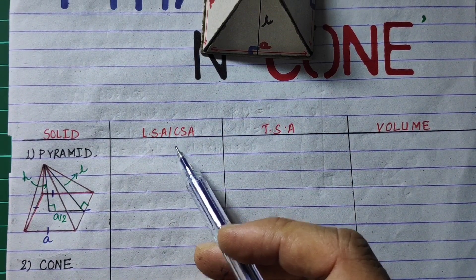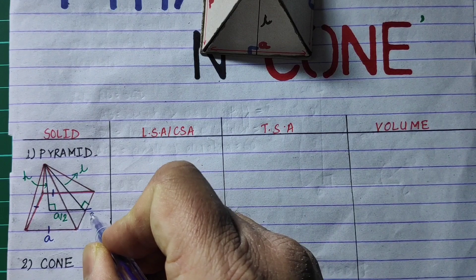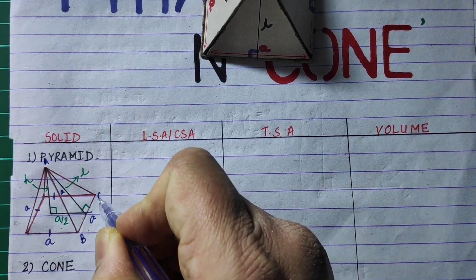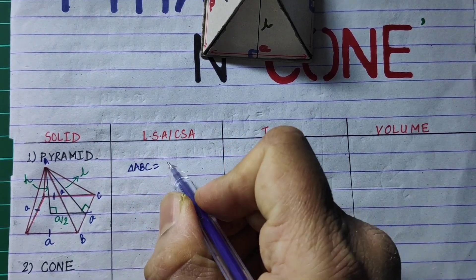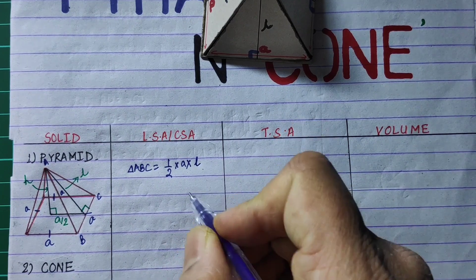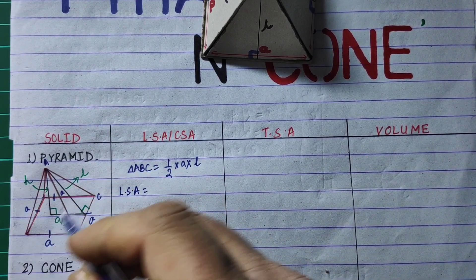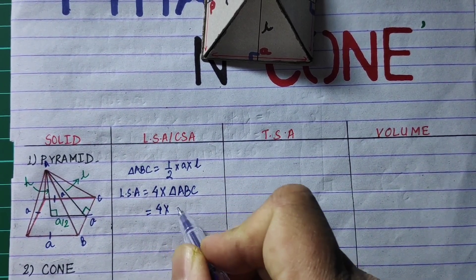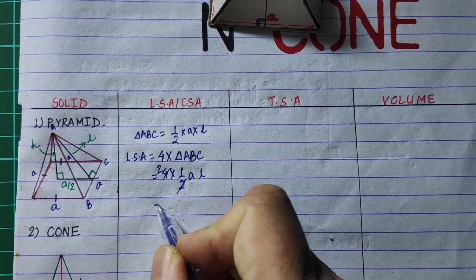The lateral surface area is the area of four triangular faces. Each triangle — triangle ABC — has area equal to half base times height L (the slant height). So the lateral surface area equals four times triangle ABC, which is four into half into A into L. Simplifying further, the lateral surface area of the pyramid equals 2AL.